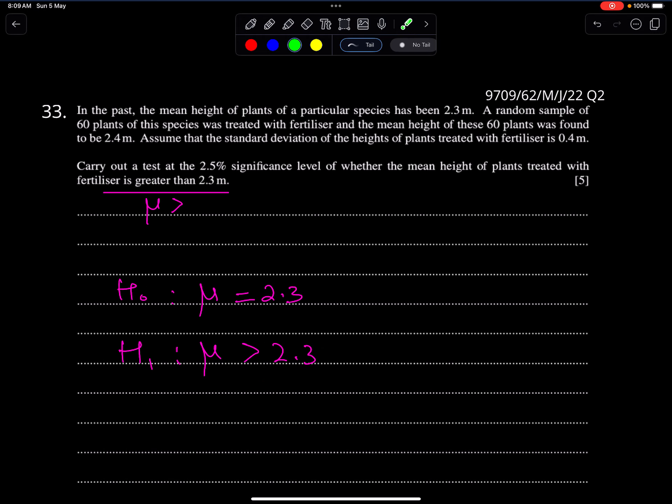Next example from June 20, paper 62, question 2. In the past, the mean height of plants of a particular species has been 2.3 - this is mu. This is continuous distribution, a measurable quantity. A random sample of 60 plants of this species was treated with fertilizer, and the mean height of 60 plants was found to be 2.4. This is the test value. Assume that standard deviation is 0.4 - this is sigma. Carry out the test at 2.5% level of whether the mean height of plants treated with fertilizer is greater. We have to check whether mu is greater than 2.3 or not. This is the claim.